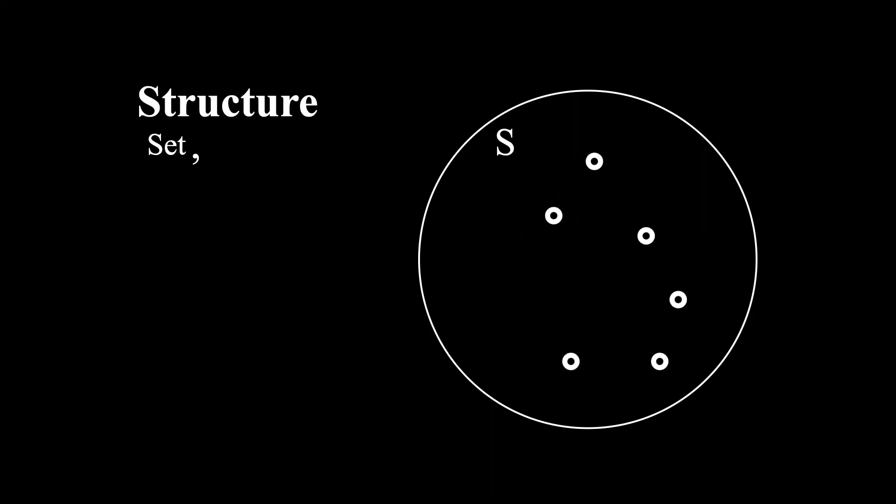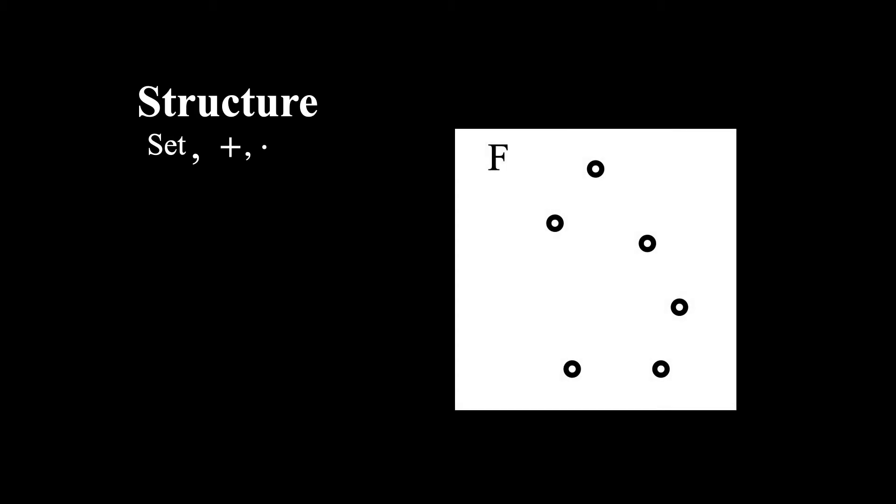If instead of an ordering, one associates the set with the operations of addition and multiplication, then a more sophisticated structure emerges: an algebraic field. These operations allow one to take two objects in the field and either add or multiply them without ever leaving the structure.